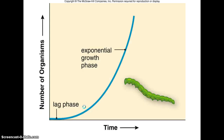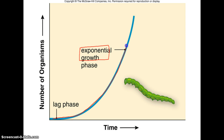While talking about population growth, this is the first type of growth pattern you need to be familiar with: exponential growth. This is a very characteristic graph to familiarize yourself with. Exponential growth occurs in a population when a population is allowed to grow without any limitation.